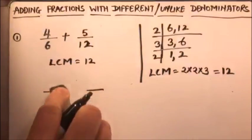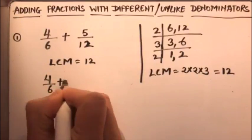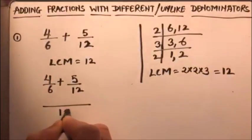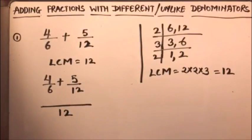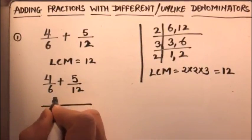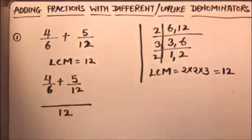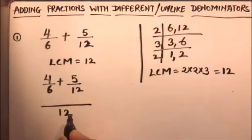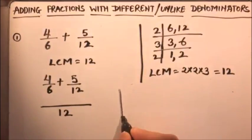Let me write the question again: four over six plus five over twelve. The LCM is twelve, so we'll write the common denominator as twelve. Now we'll find how many times each denominator goes into twelve. We divide twelve by the denominator of the first fraction — twelve divided by six is two.